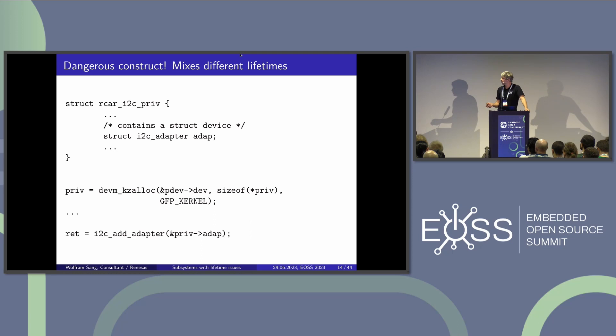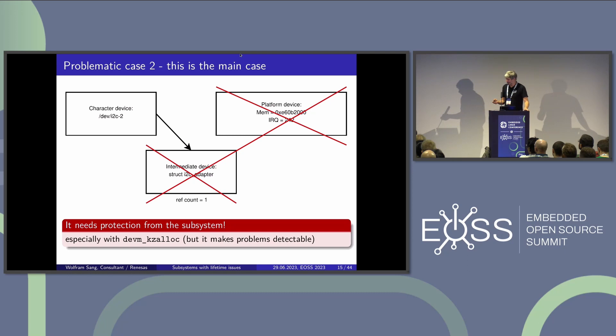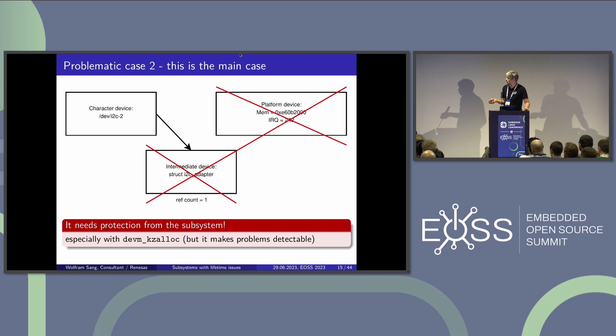When add_adapter is called, the system goes live and user space or other kernel users may increase the reference count. So if the intermediate device still has a reference from user space and the platform device goes away, using devm_kzalloc means at the end of the platform device's remove callback it will free the complete private structure — including this intermediate device — even though its ref count is still one because user space was still connected to it.